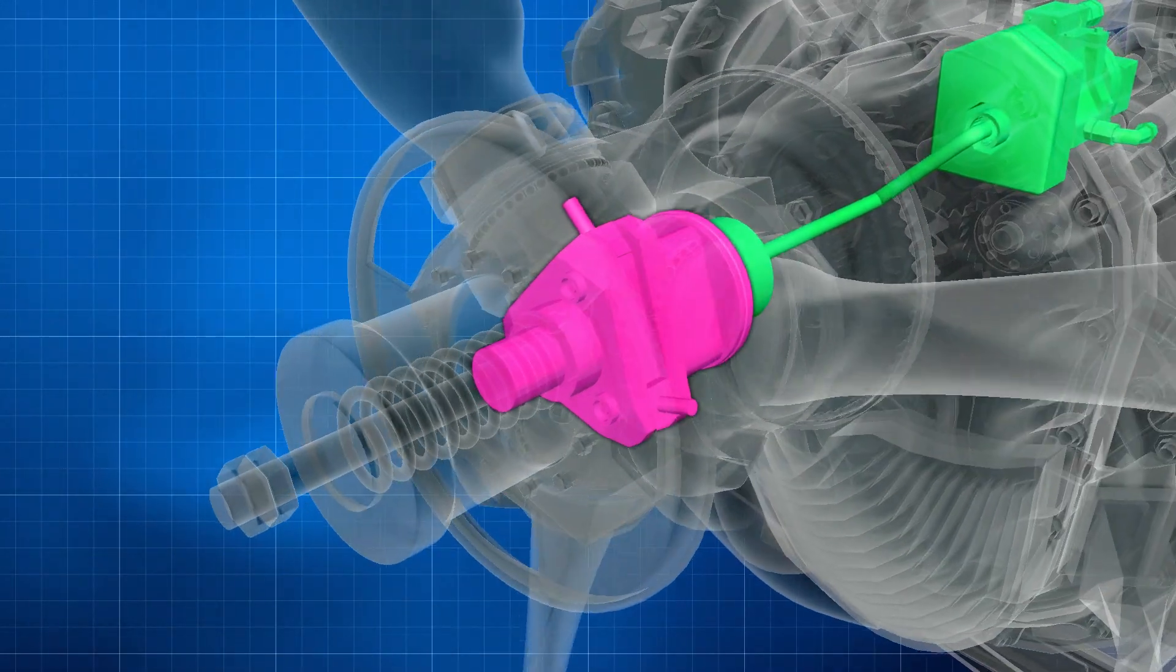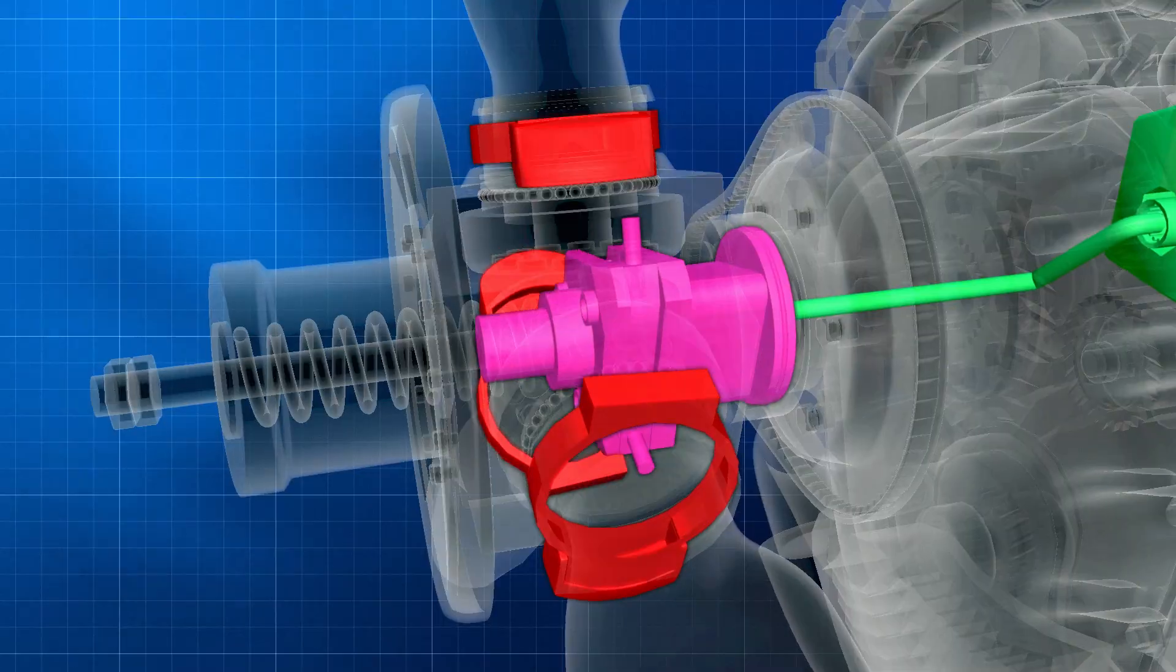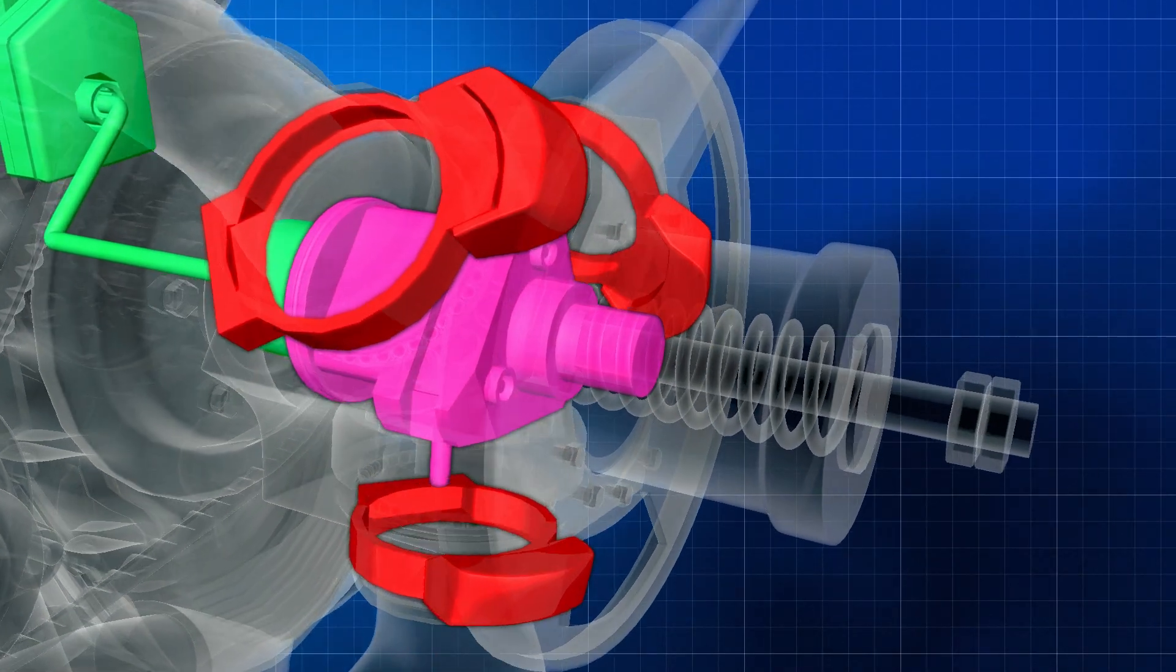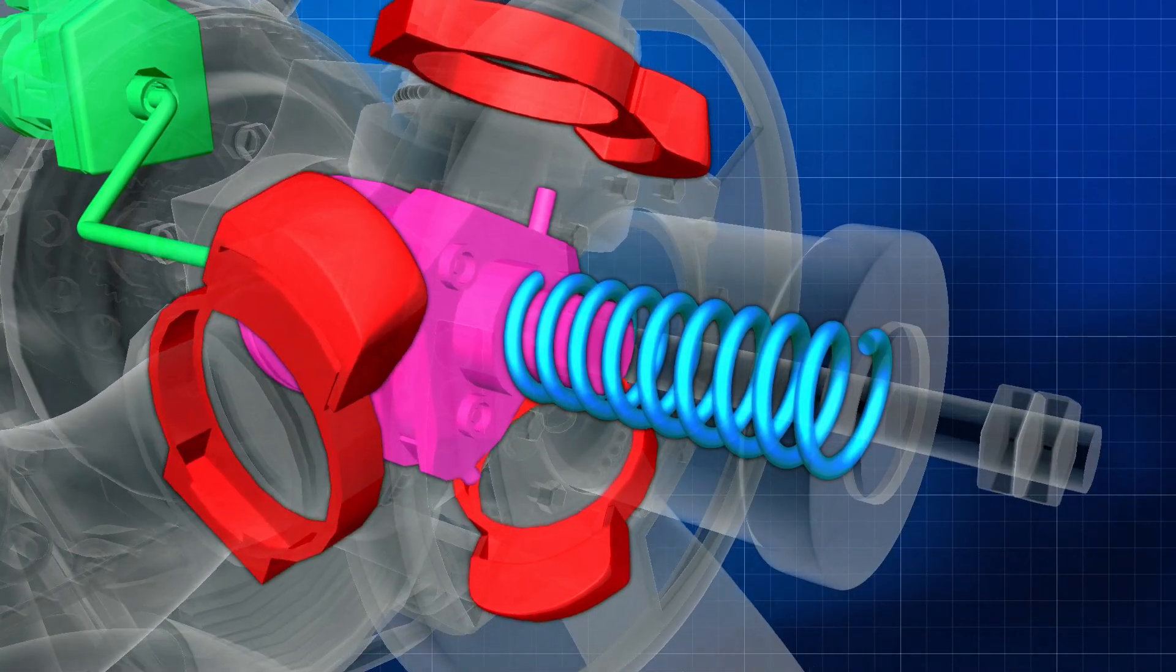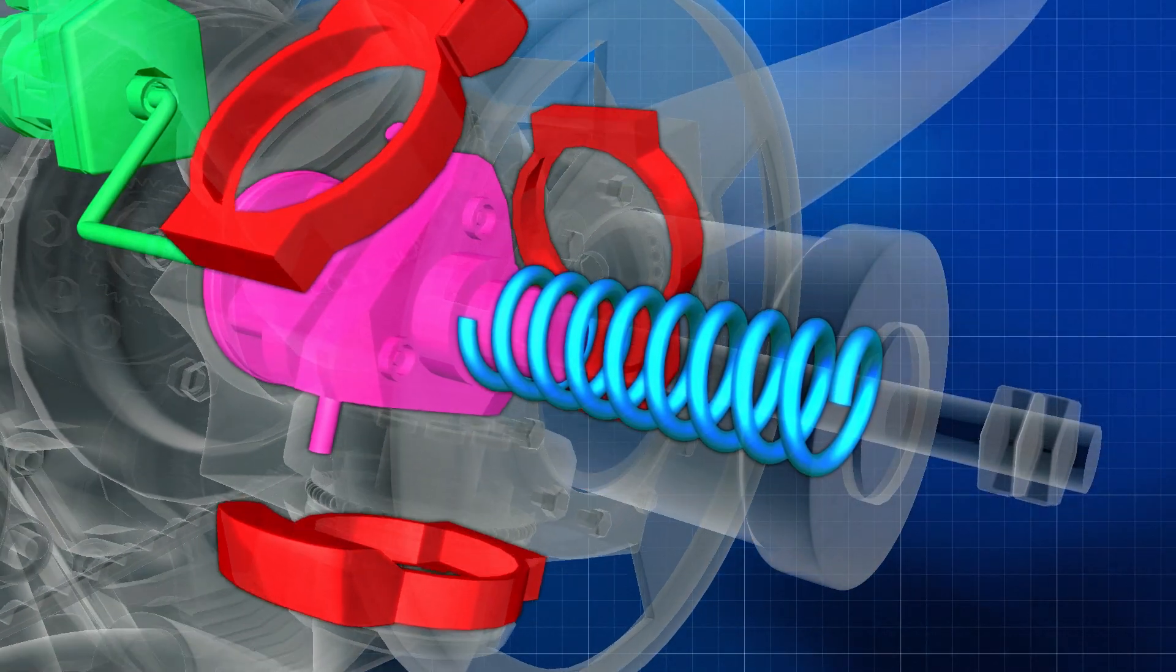All oil pressure is then dumped from the governor, and the counterweights drive the propeller blades toward feather. As centrifugal force acting on the counterweights decays from decreasing RPM, a spring in the propeller hub works to force the blade into the feathered position.